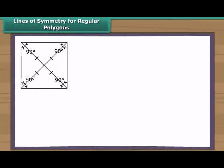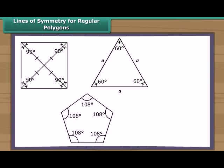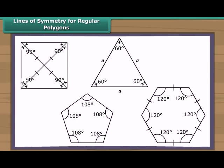The measures of all the angles are equal. Therefore, a square, an equilateral triangle, a regular pentagon, and a regular hexagon are examples of regular polygons. In all of these, all the sides are equal and the measures of their angles are also equal.